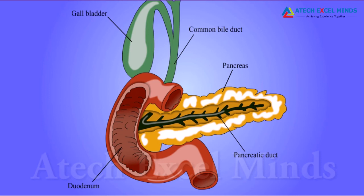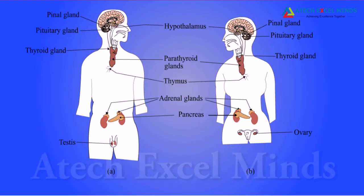An improper amount of insulin leads to diabetes. We have now come to the end of this lesson, where we learned about the various hormones in the human body and their roles.